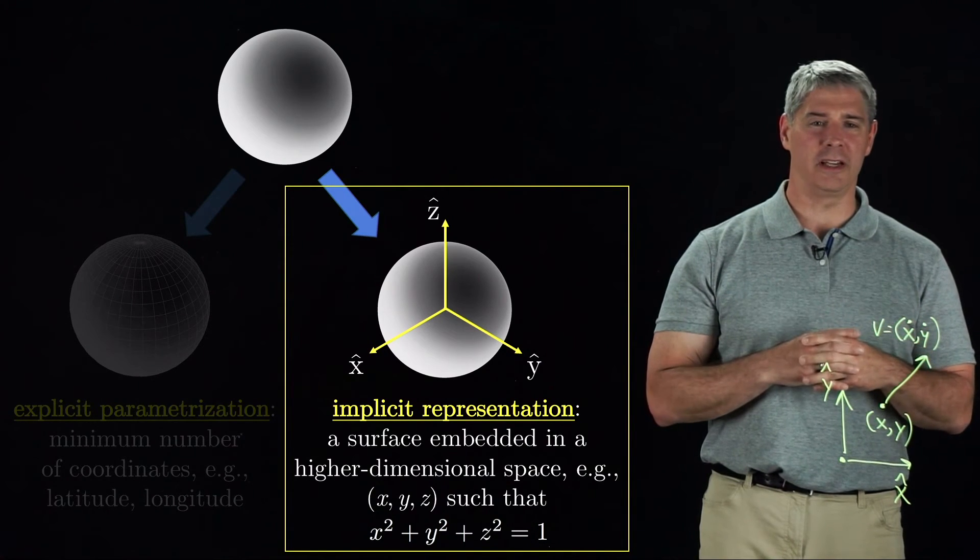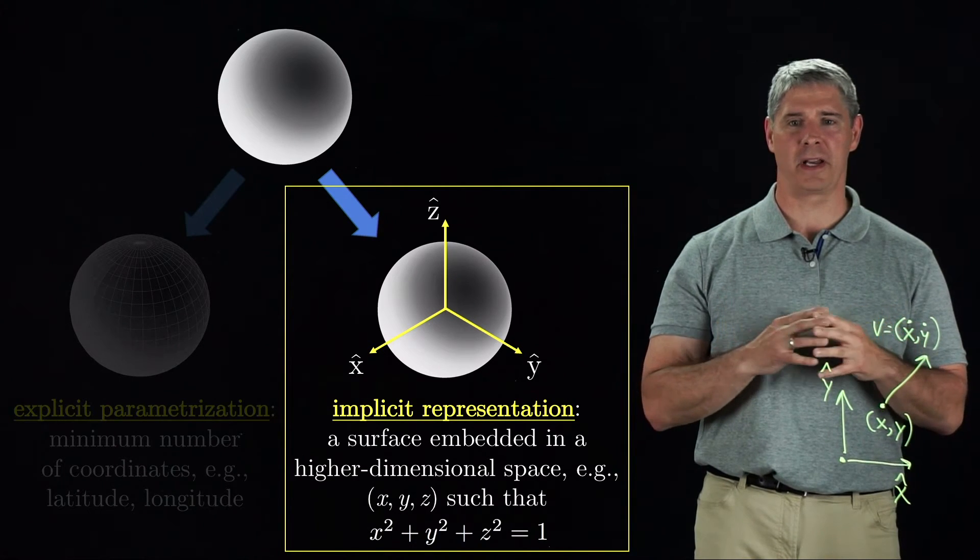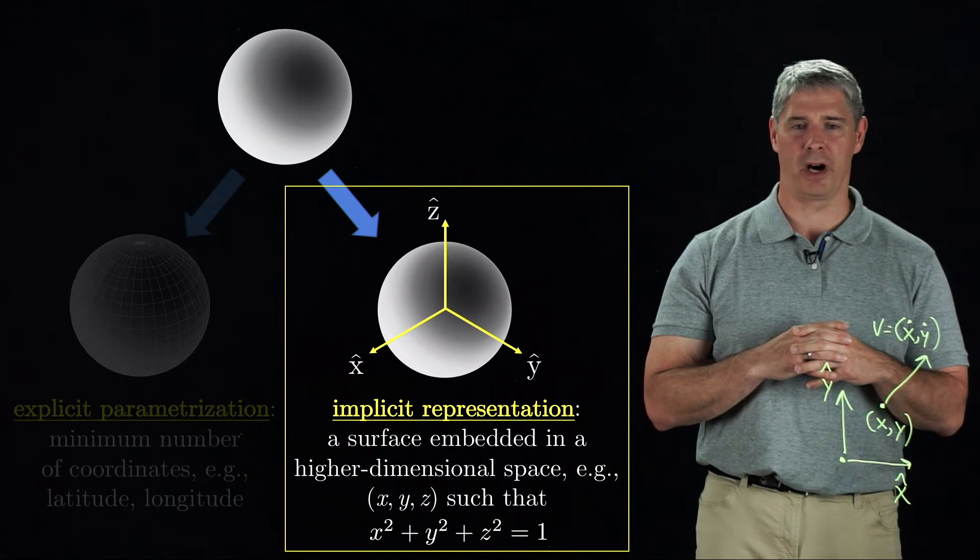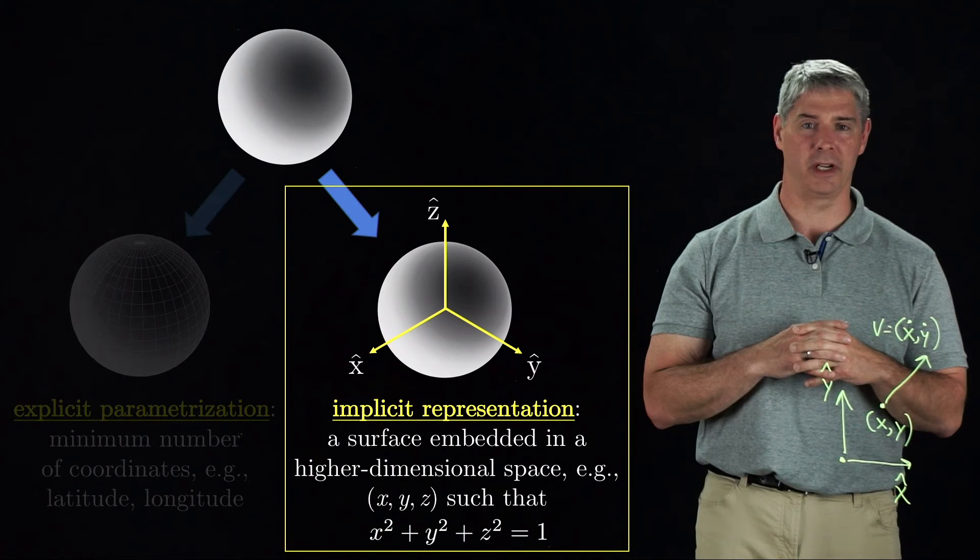Throughout this book, we use implicit representations, particularly for the curved, non-Euclidean space of orientations of a rigid body. The singularity-free implicit representation we use is called the rotation matrix.